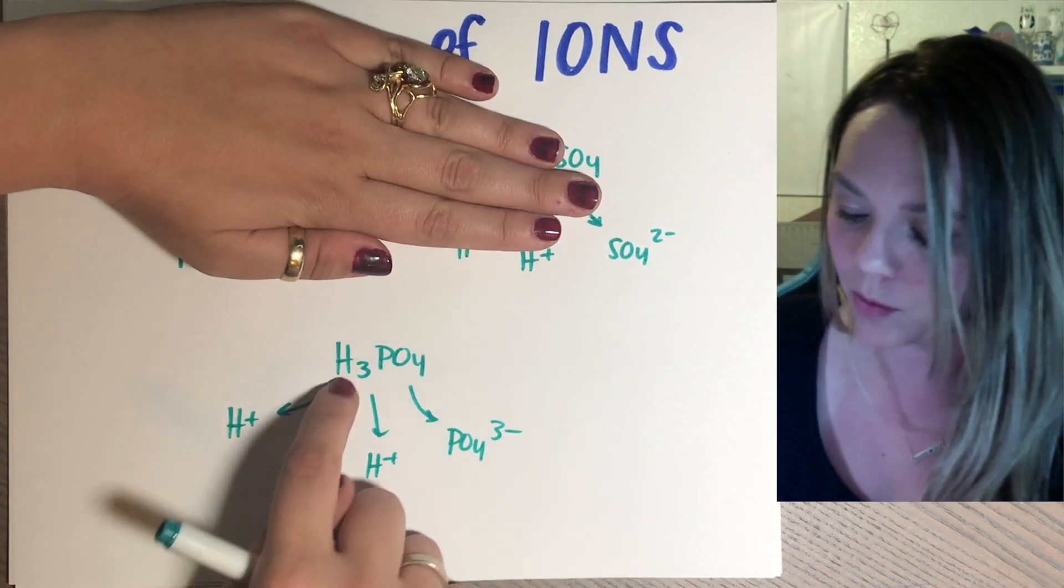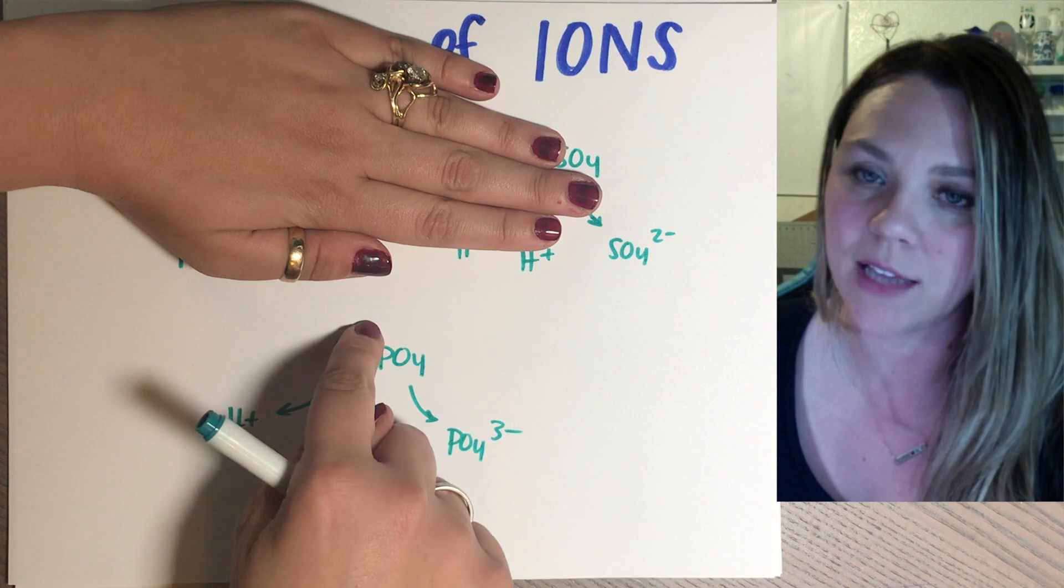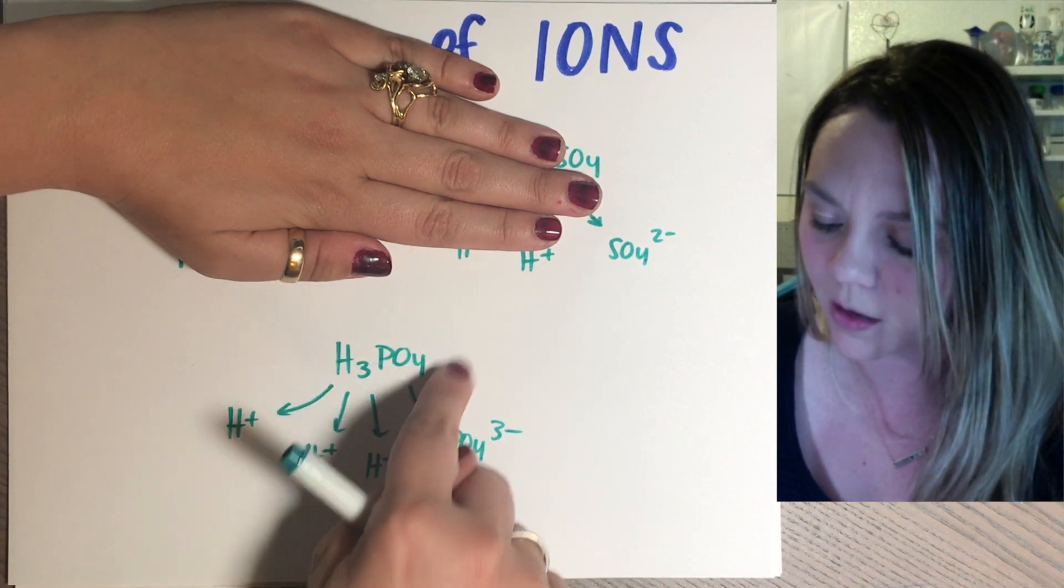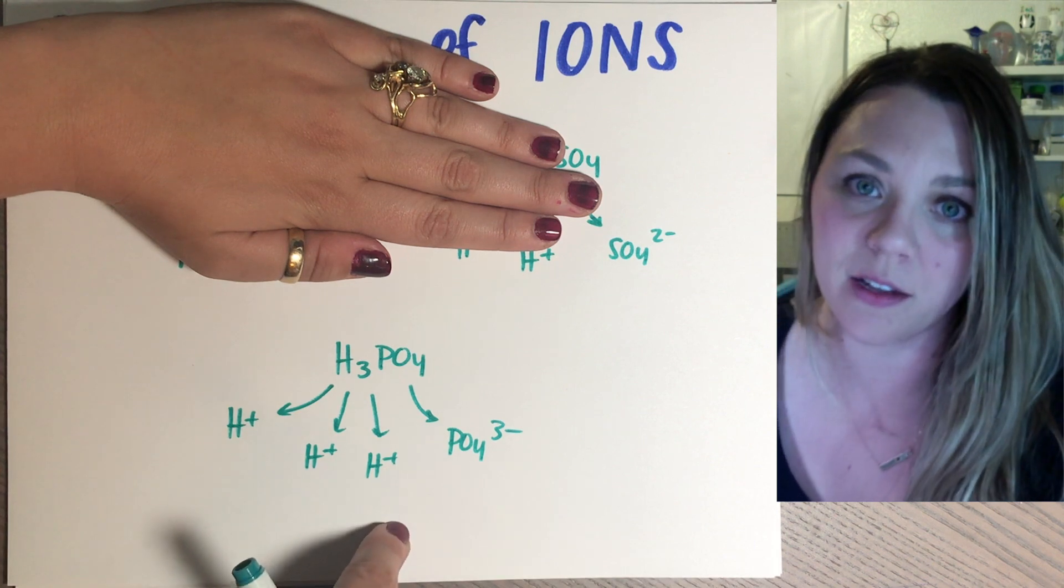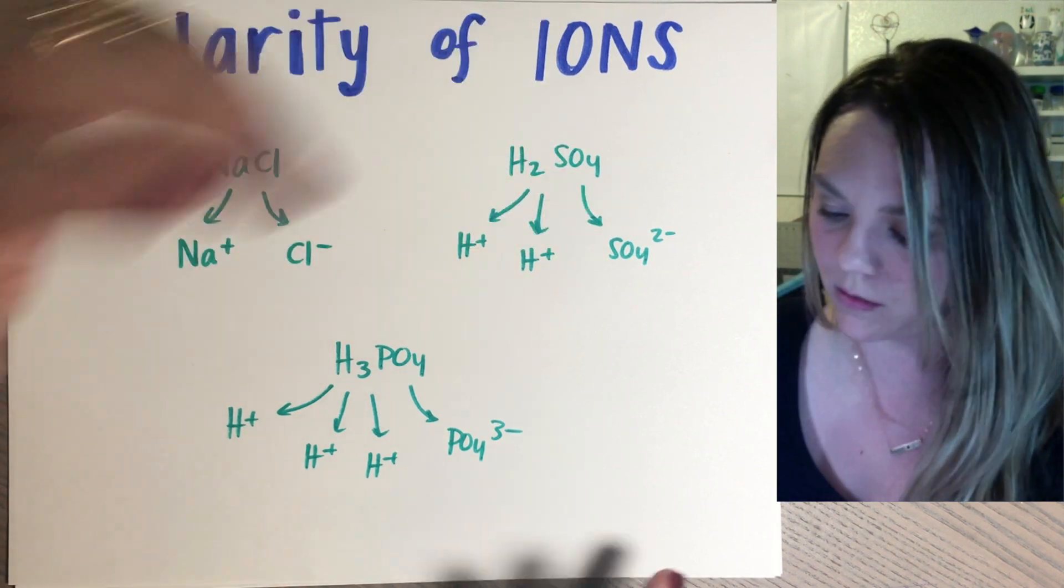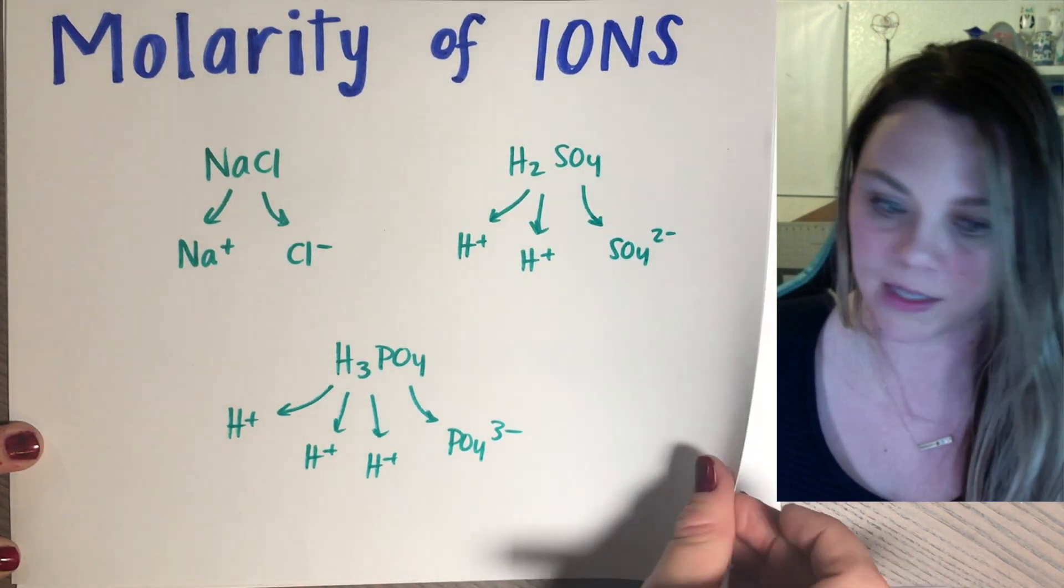If, on the other hand, you're working with something like this, where you have phosphoric acid, and you know the molarity of your acid, then it says find the molarity of the H+ ions, that's trickier. So let's actually do it.